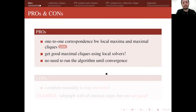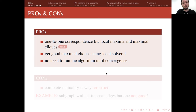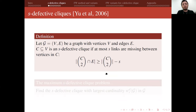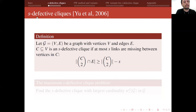If the right solver with support identification properties is used, there is no need to run the algorithm until convergence — once the support is found, we are done. However, complete mutuality is too strict a notion of a cluster. Just imagine a subgraph with almost all internal edges present — this is not a formal clique, but it is good from a practical point of view. This is why people propose alternative ways to describe communities, like s-defective cliques, where a subset C in an undirected graph is an s-defective clique if at most s links are missing between the vertices in C.